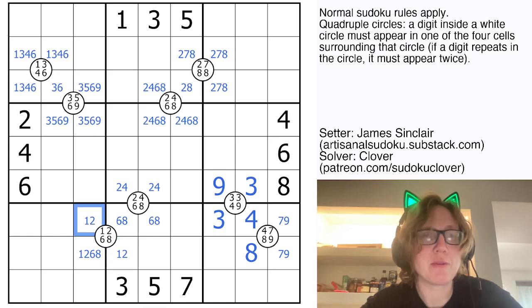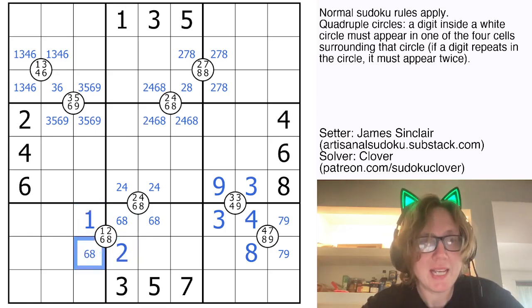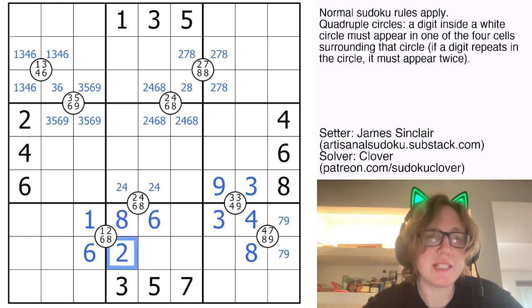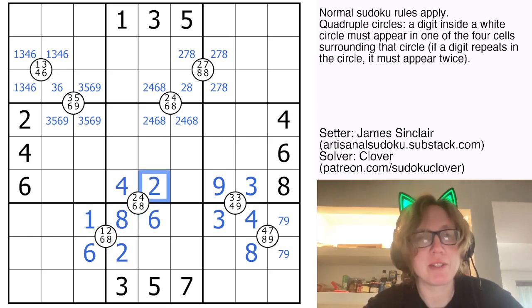So this cell can't be six or eight and neither can this one. So those are my one and two for this quadruple because of the one up here I know which one is which. And this is either six or eight and I have an eight now in the row that I placed earlier and that disambiguates everything.